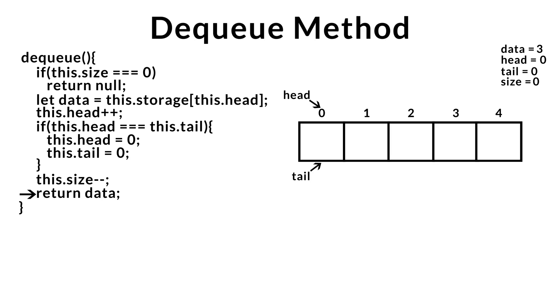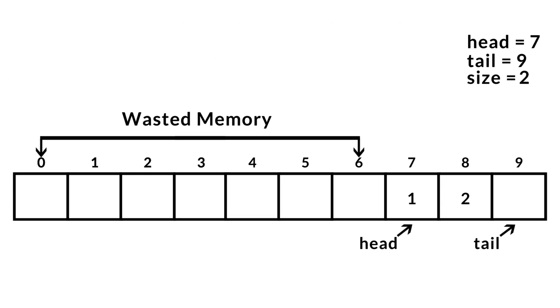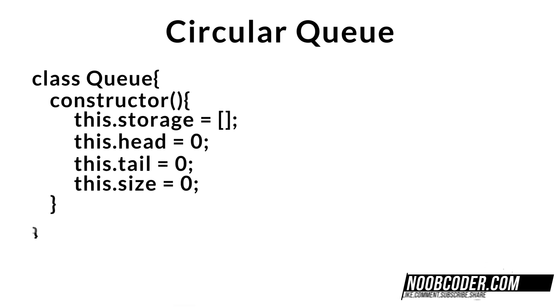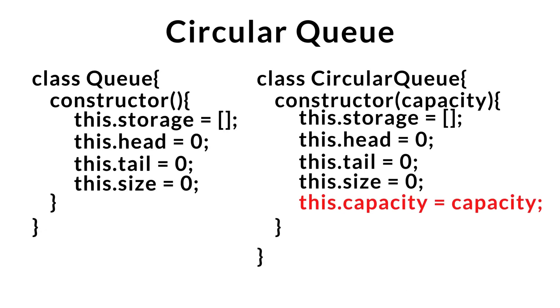Let's talk about the downfall of implementing a queue like this. As our queue gets bigger, we could potentially be wasting more and more space. In order to combat this, we could implement a special kind of queue called a circular queue. Our circular queue constructor differs from the original in that it must have a max capacity — the maximum number of elements we can store. We need this to calculate where our head and tail indices should be when we NQ or DQ. We'll also need a helper method called isFull, which returns whether or not our circular queue is full by checking if capacity equals size.